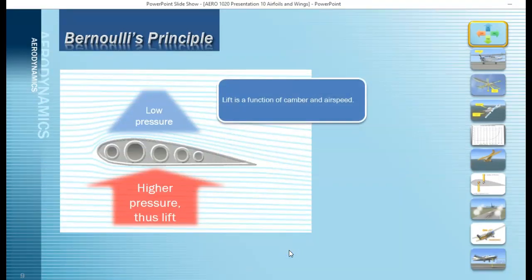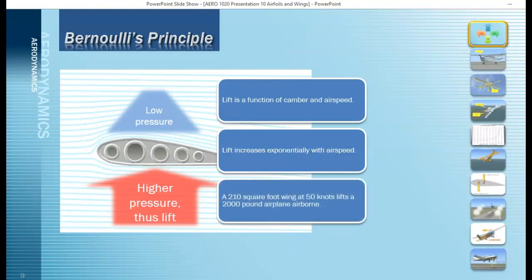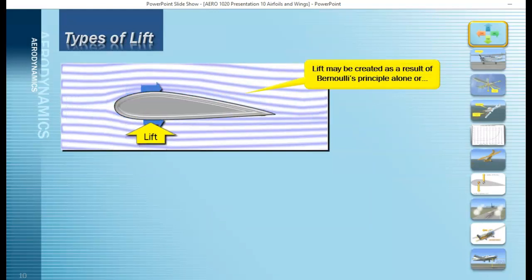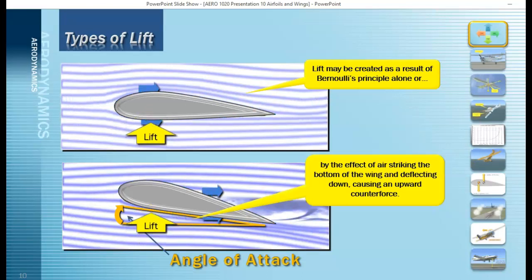High pressure beneath the airfoil produces lift. So lift is a function of camber and airspeed. Lift increases exponentially with airspeed — a 210 square foot wing at 50 knots can lift a 2,000 pound airplane. Lift can also be created through another mechanism: when air hits the bottom of the airfoil and flows over the top, it's deflected downward — this is called downwash. Because of this downward deflection, there is an equal and opposite upward reaction due to Newton's Third Law, which also contributes to lift.